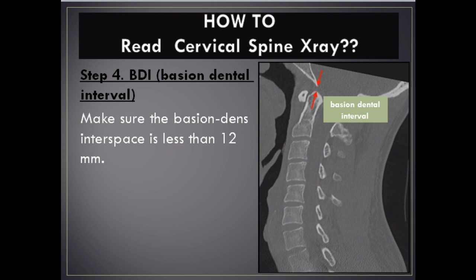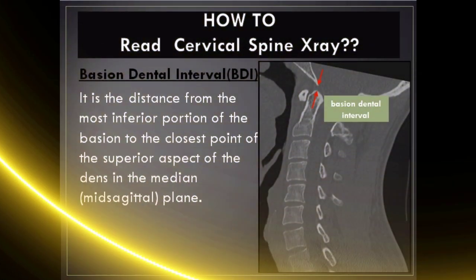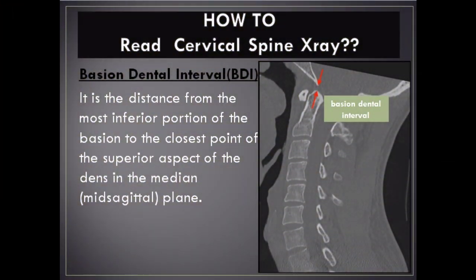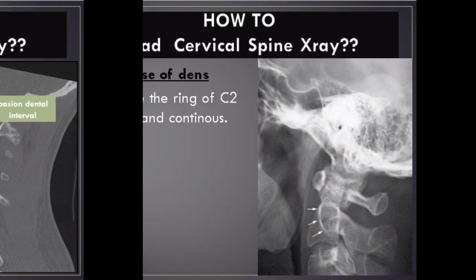Step 4 – BDI (Basion Dental Interval): Make sure the basion-dens interspace is less than 12 mm. The basion dental interval is the distance from the most inferior portion of the basion to the closest point of the superior aspect of the dens in the mid-sagittal plane.